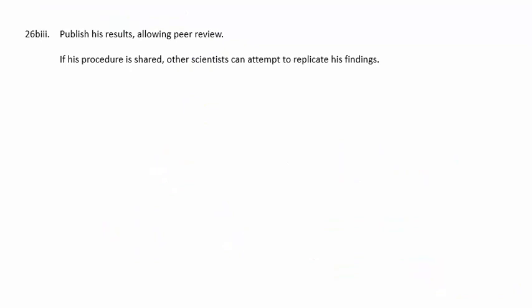In part 3, we're told when de Broglie first put forward his idea, it was new. We're to describe one way in which the scientific community could validate his ideas. If he publishes his results, this allows peer review. And if his procedure is shared, other scientists can then attempt to replicate his findings.